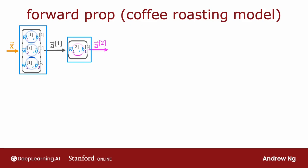Let's take a look at how you implement forward prop in a single layer. We're going to continue using the coffee roasting model shown here. Let's look at how you would take an input feature vector x and implement forward prop to get this output a2.